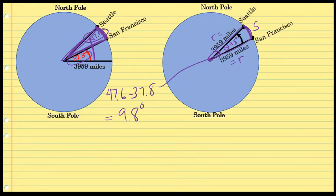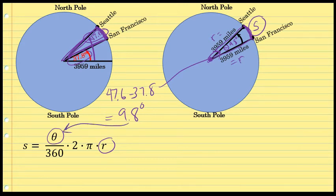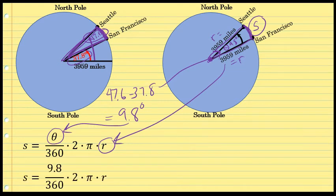When it comes to sectors of circles, there's a formula to calculate the arc length if you know the central angle and the radius: s = (θ/360) × 2πr, where θ is the central angle and r is the radius. Substituting 9.8 for θ and 3,959 for r, the arc length s — which represents the distance from Seattle to San Francisco — equals 9.8 divided by 360, times 2 times pi times 3,959.